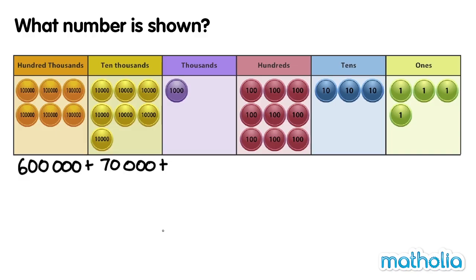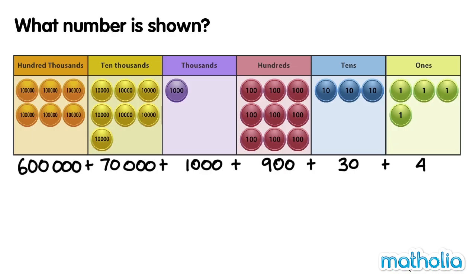In the 1,000s place, there is one counter. It has a value of 1,000. In the 100s place, there are nine counters. They have a value of 900. In the 10s place, there are three counters. They have a value of 30. And in the 1s place, there are four counters. They have a value of four.